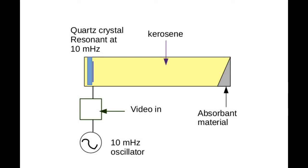This sets up pressure waves in the container of kerosene. The dimensions of the cell are such that it takes one horizontal line time to travel the length of the cell. In the case of the British TV standard at the time, this was 98.8 microseconds. At the end of the cell is an absorbing material to avoid reflections and consequent standing waves.